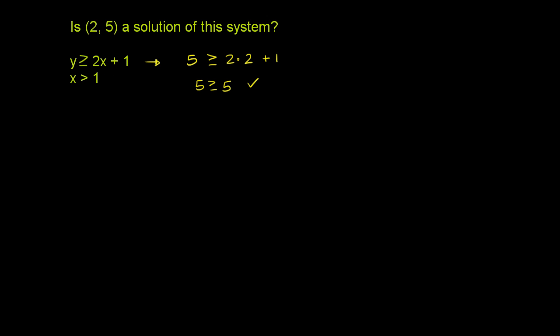Let's see the second one. x needs to be greater than 1. So in 2 comma 5, x is 2. So 2 is greater than 1. So it actually satisfies both of these inequalities. So 2 comma 5 is a solution for this system.